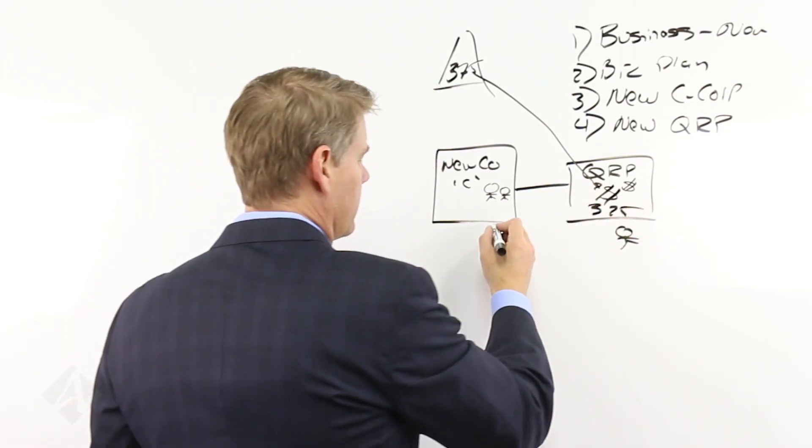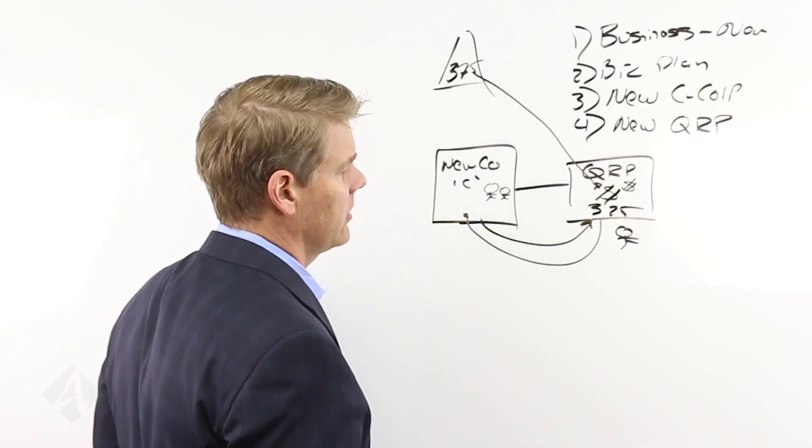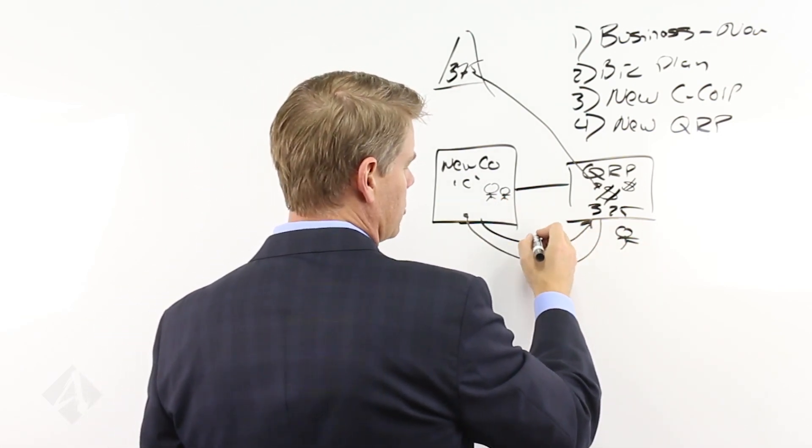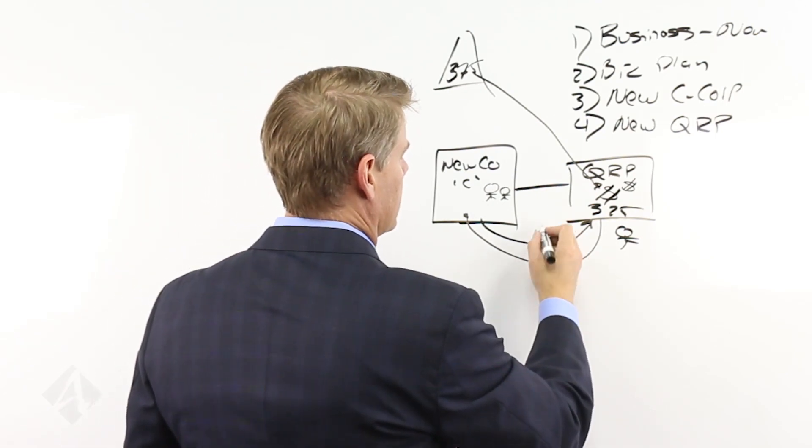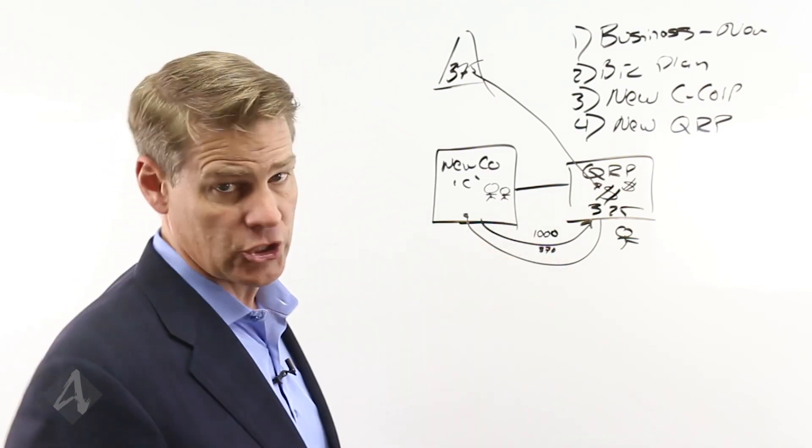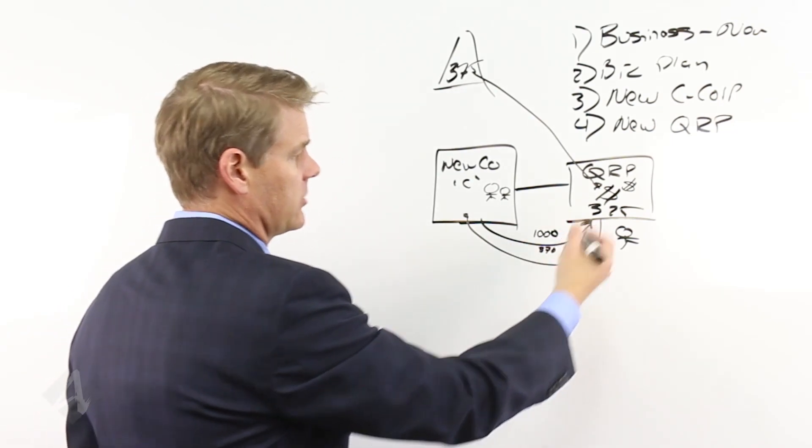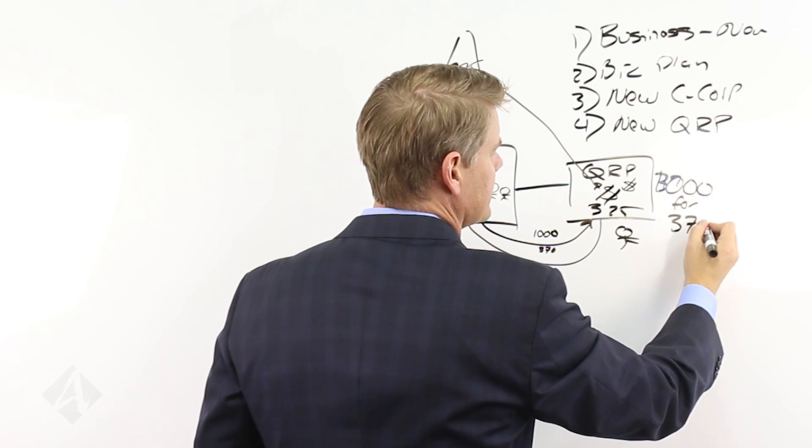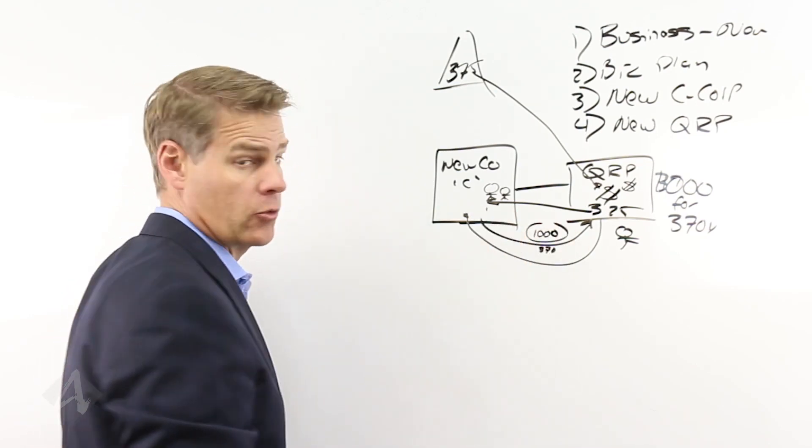Once that's set up, then we'll come over here and we will issue shares to this QRP in exchange for money. So if I decided that I'm going to issue out, let's say we're going to do a thousand shares, to the QRP. Well, then if we're going to do a thousand shares, let's do $370 per share. That would be $370,000 that would be paid over to the corporation from the QRP. So the QRP now buys 1,000 shares of the corporation for $370,000. So $375,000 then is deposited into the corporation's account in exchange for 1,000 shares of that corporation, just like that.